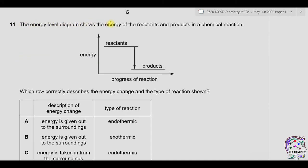Question eleven: the energy level diagram shows energy of reactants and products. On the x-axis is progress of reaction and on the y-axis is energy. The energy of the reactants is higher than the energy of the products, meaning energy is released into the surroundings — the reaction is exothermic. Option A says energy is given out but the reaction is endothermic — incorrect. Option B says energy is given out and the reaction is exothermic — correct. Answer is B.